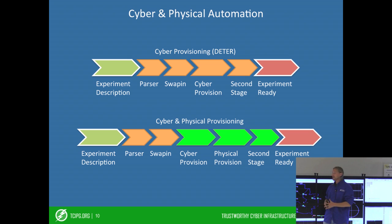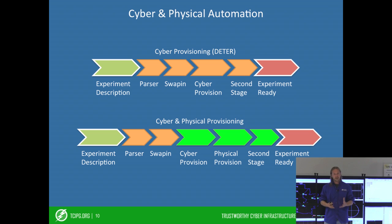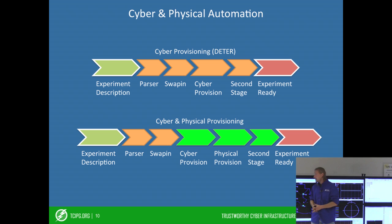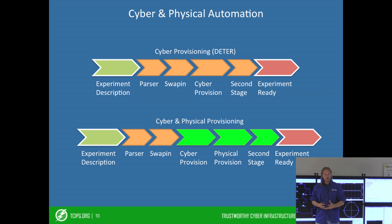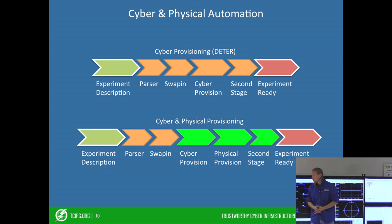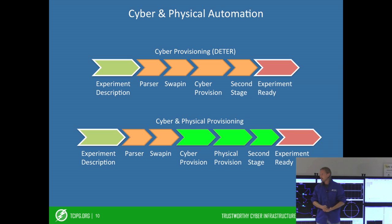The cyber-provisioning will reboot computers, install operating systems, and set up the networking parameters. Once those machines are all up and running, a second stage process will start, which starts services and sets up instrumentation. We've made modifications to the cyber-provisioning process as well as added a physical provisioning step, and we've created new services and instrumentation that can be used in this second stage.